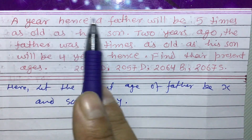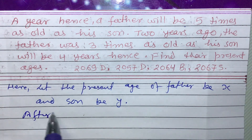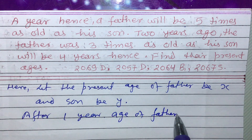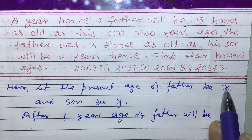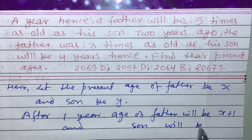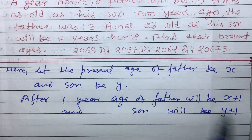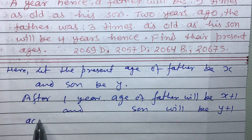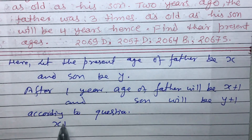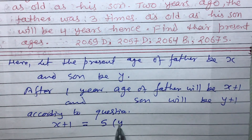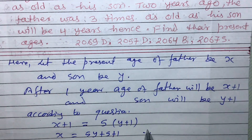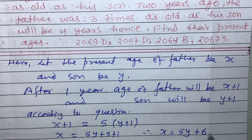It is given that a year hence — meaning after one year — the age of the father will be x plus one, and the son will be y plus one. The relation is: the father will be five times as old as his son. So the equation is: x + 1 = 5(y + 1). Simplifying: x = 5y + 5 + 1, therefore x = 5y + 6. This is equation one.